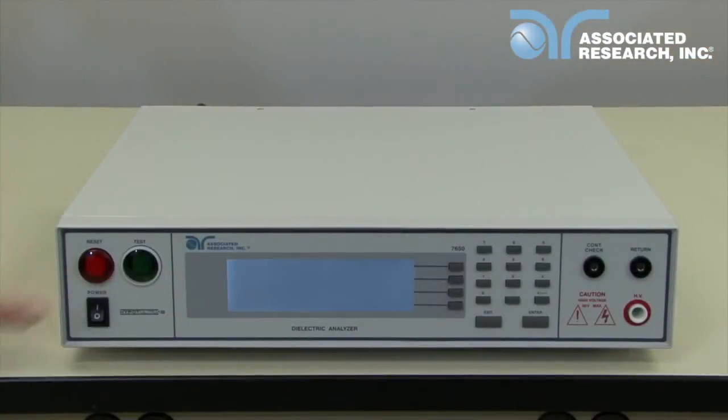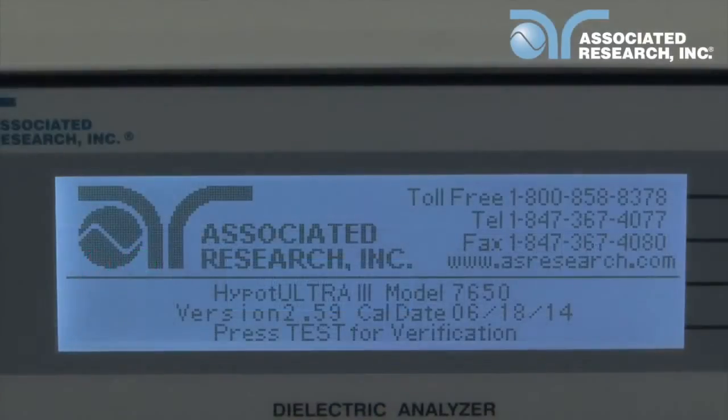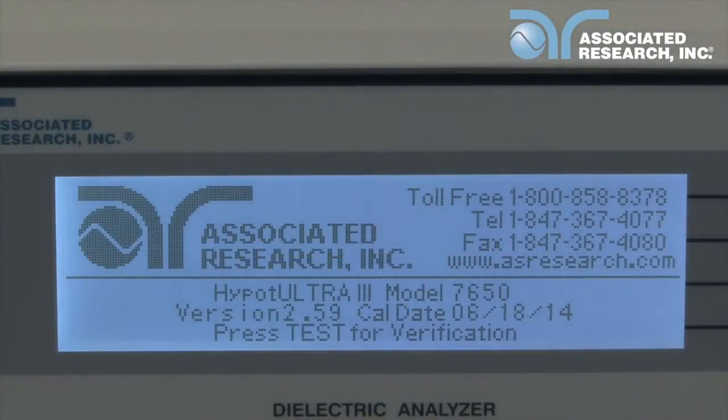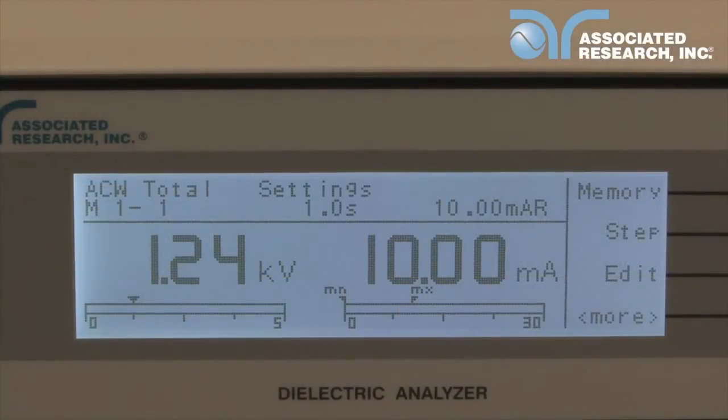Turn on the power switch on the front panel of the 7650 instrument. On the startup screen you will see the Associated Research company name, model number, and firmware version. From here, the instrument will automatically navigate to the perform test screen.